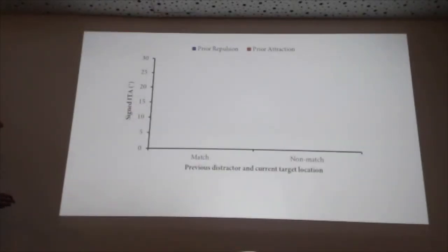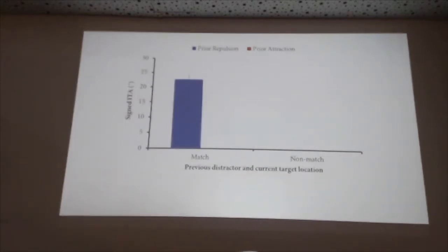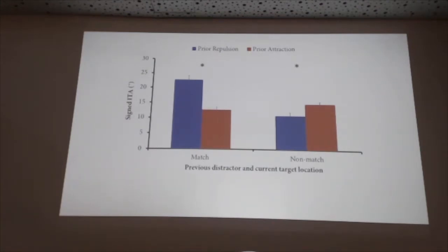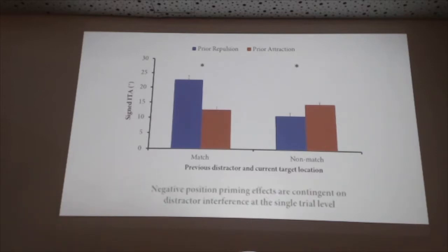In the match case with a prior repulsion — where you moved away from that location — it should now be really hard not to reach there. And indeed, there is a pretty good amount of deviation on those trials. In the attraction case, it might not be as hard to move to that location because you almost did it recently; there's still some lingering activation. That's exactly what we see, and it's a pretty big difference. In the non-match case, the effect flips, and there are potentially interesting reasons for that.